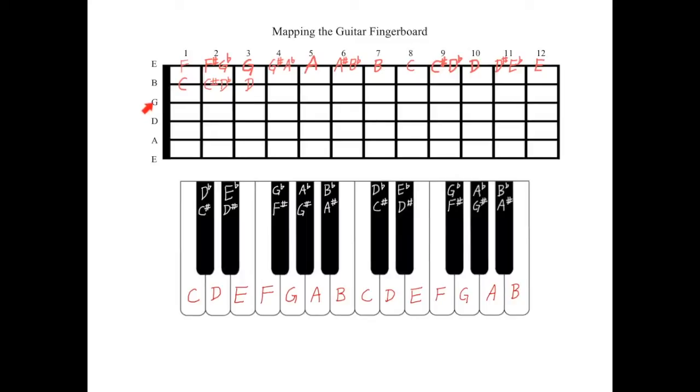The third string on the guitar is G, the fourth string D, the fifth string A, and the sixth string the low E. Continue up each of these strings in half steps by referencing the piano diagram to finish mapping the guitar.